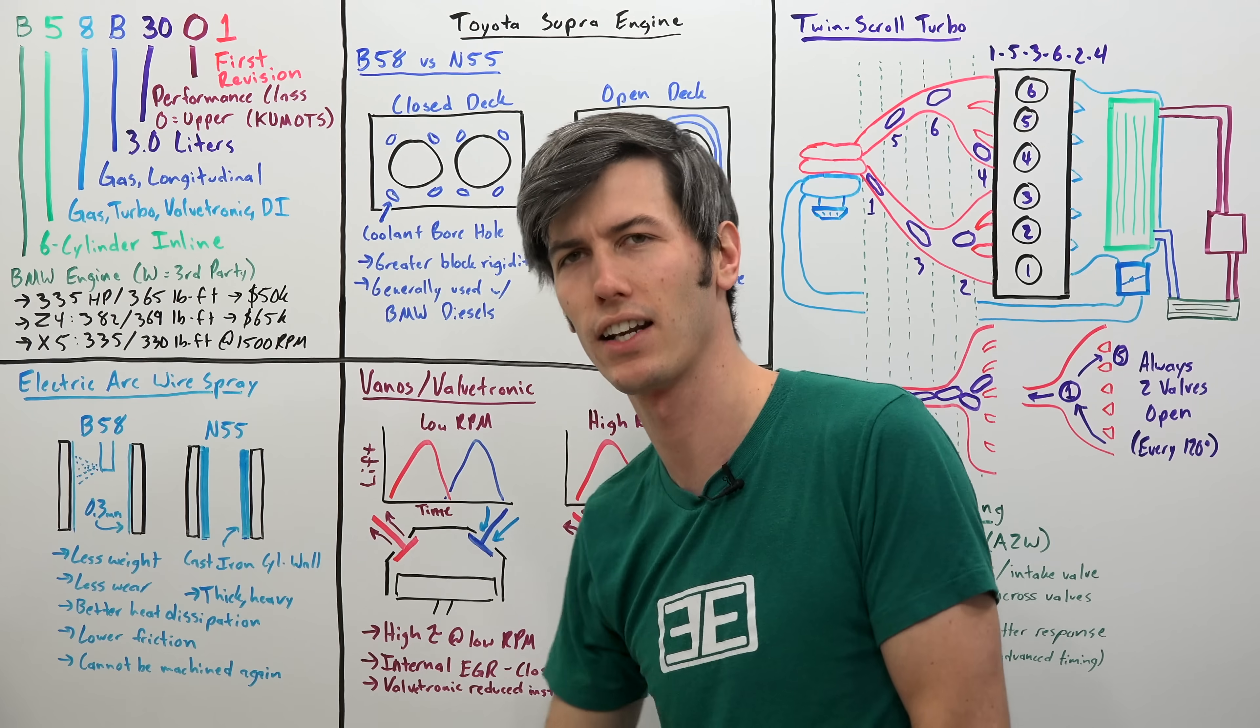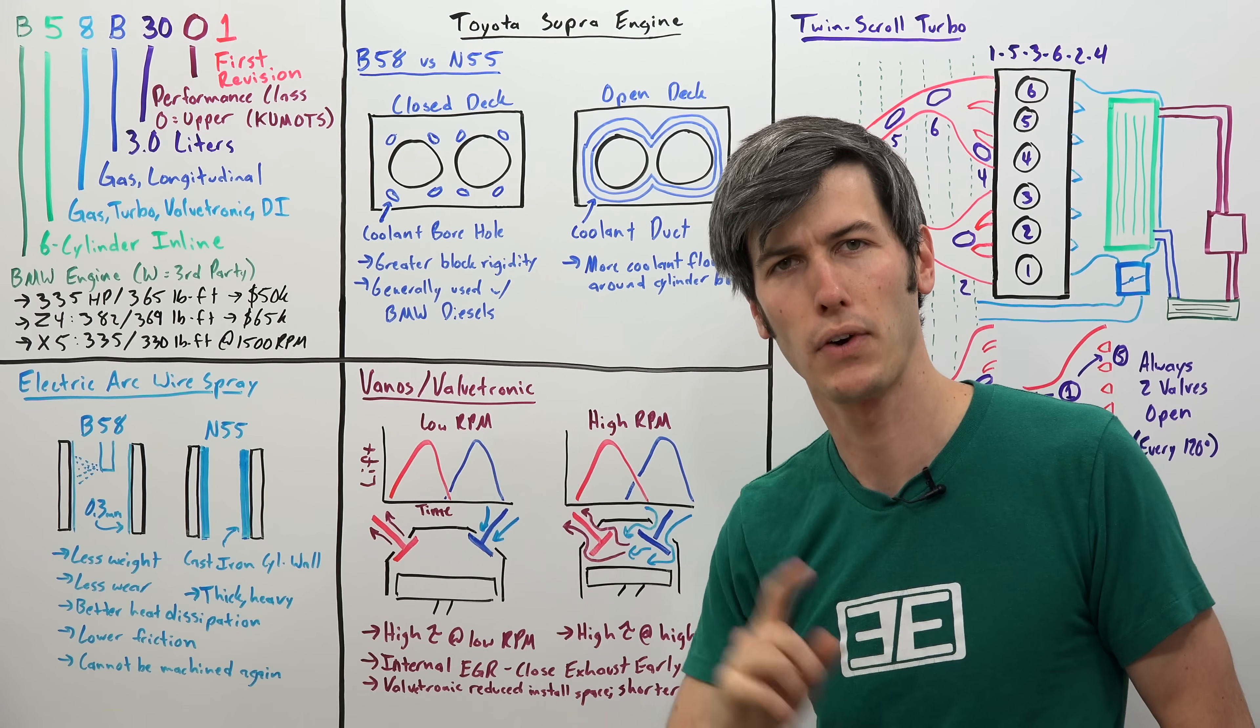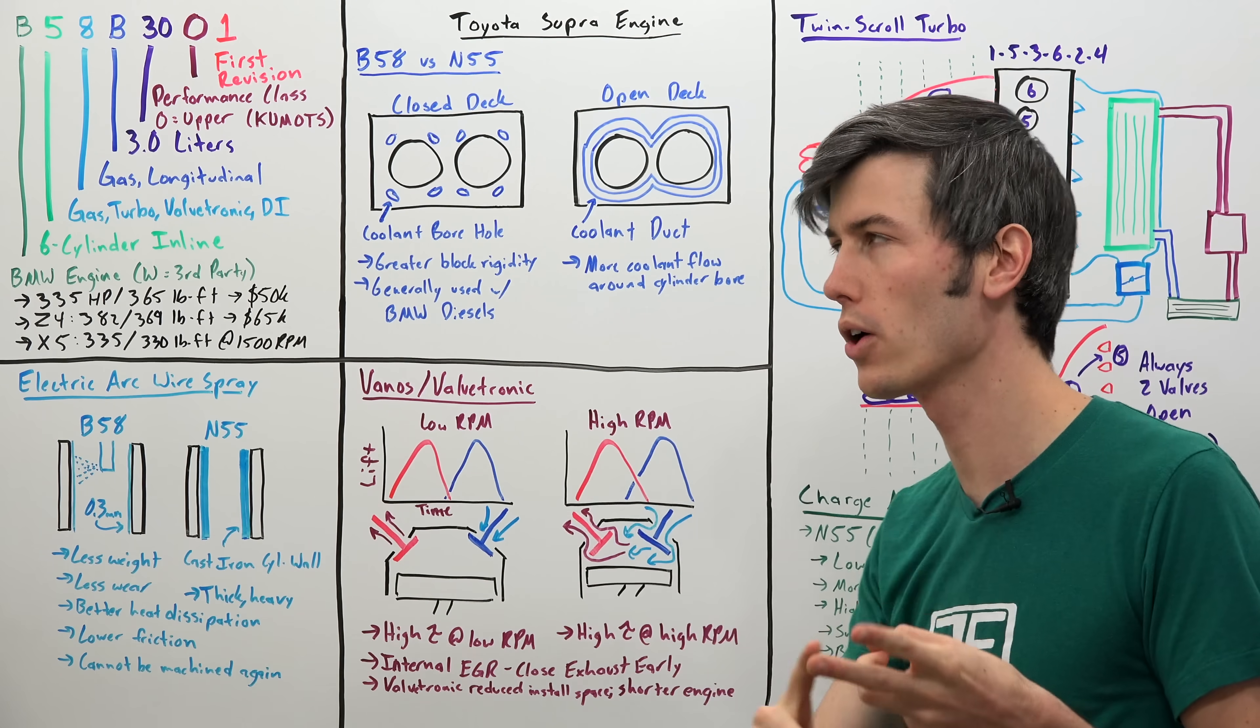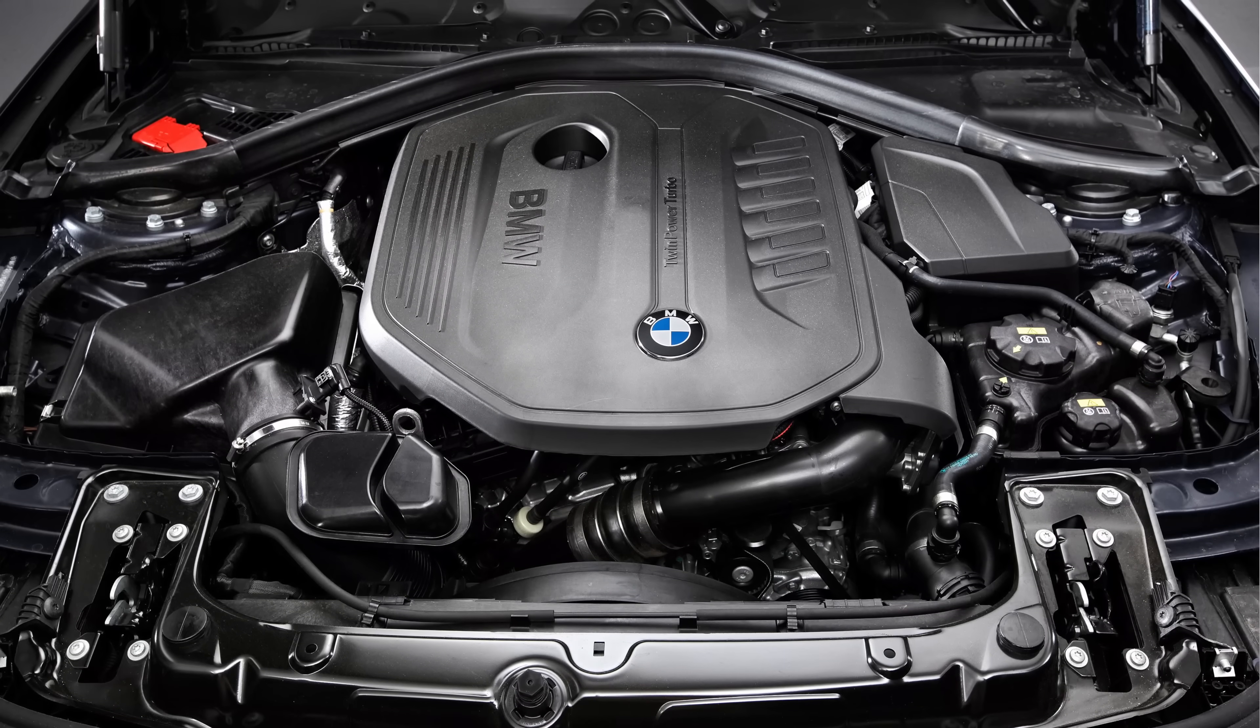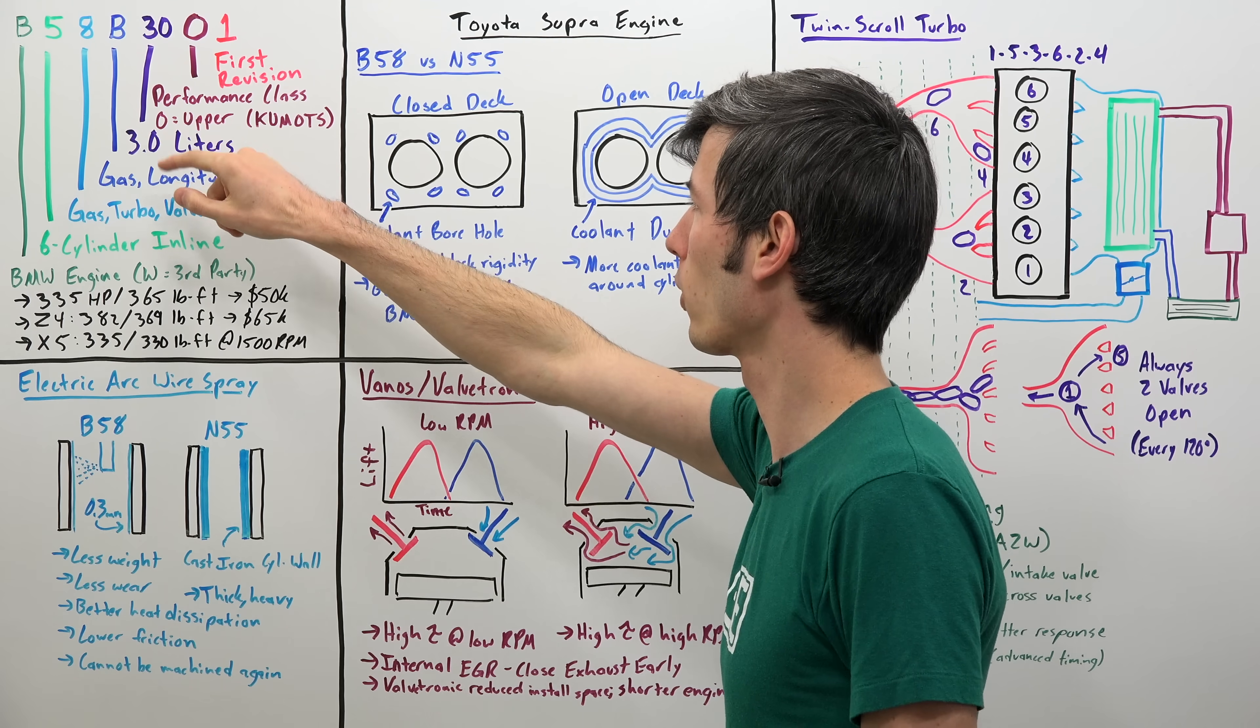The 5 means that it's a six cylinder engine. If this number was a 3 it would be a three cylinder, if it was a 4 it would be a four cylinder, but because it's a 5 it's an inline six cylinder. The 8 means that it is gasoline powered, turbocharged, has valvetronic and direct injection. The second B also means that it uses gasoline but that the engine is mounted longitudinally. The 30 represents the liters of the engine, so it's an inline six cylinder 3.0 liters.